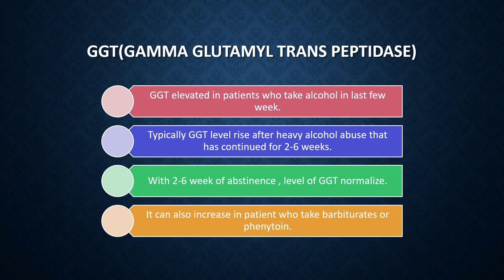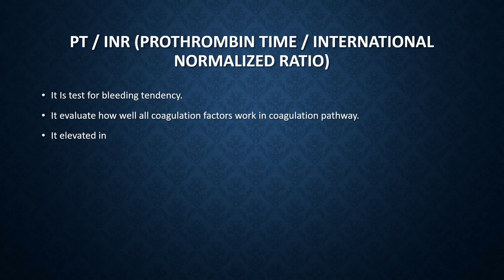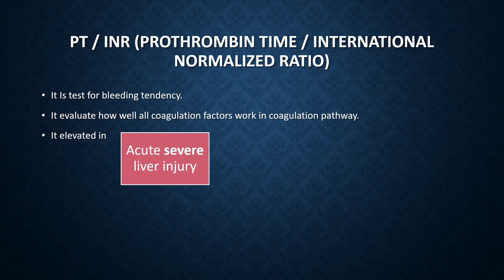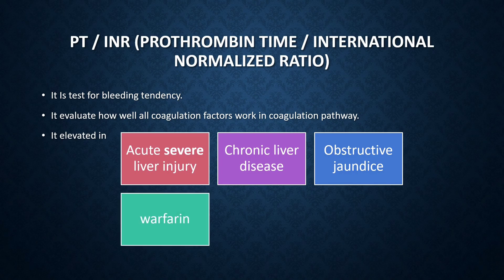One important thing to remember is that GGT can also increase in patients who take barbiturates or phenytoin. The next one is PT/INR — prothrombin time and international normalized ratio. It is used to assess the bleeding tendency of the patient and evaluates how well all coagulation factors work in the coagulation pathway, specifically the extrinsic and common pathways. PT/INR is elevated in acute severe liver injury but not in mild or moderate liver injury, so a deranged PT/INR indicates severe liver injury. It is also elevated in chronic liver disease like cirrhosis, obstructive jaundice, or in patients on warfarin — such as cardiac patients after valve replacement.